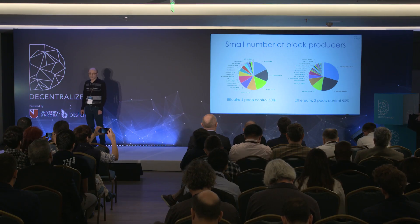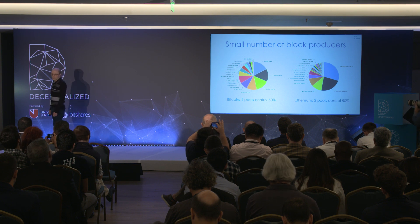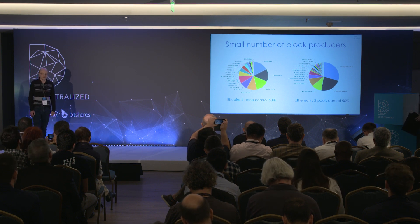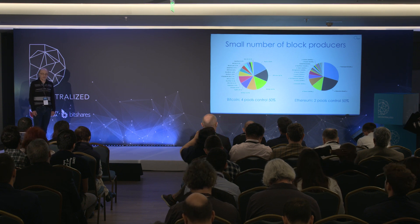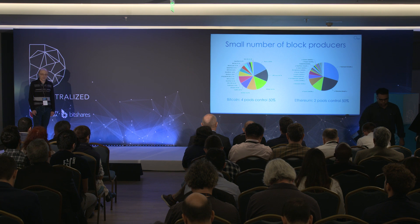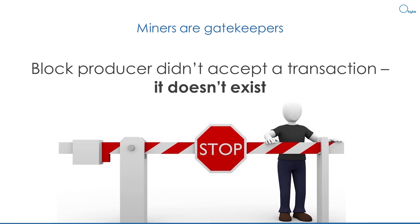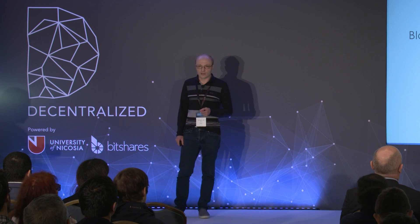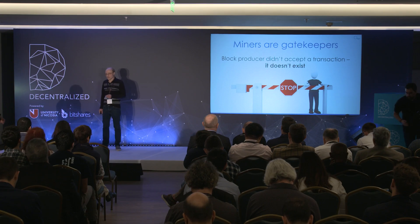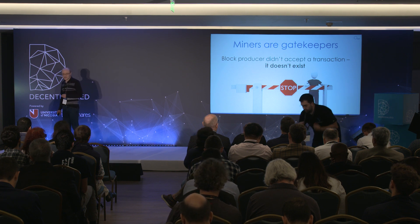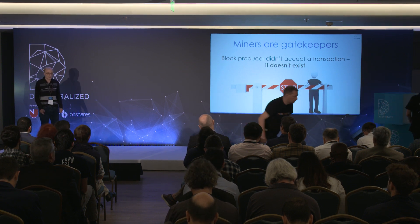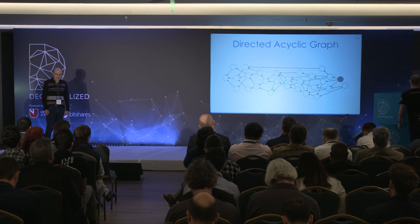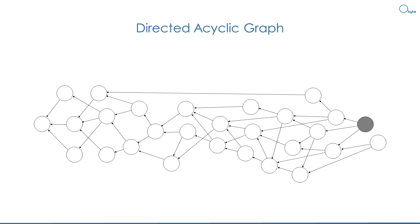For example, in Bitcoin there are only four mining pools that control more than half. And in Ethereum, only two. Should they collude, they could block any transaction from entering the blocks. Over the years, many blockchain designs have been proposed that vary in how block producers are selected. But still, block producers serve as gatekeepers, and every transaction has to pass through the miners. And if miners do not accept your transaction, it doesn't exist in the ledger. This is a problem that is inevitable in blockchains.